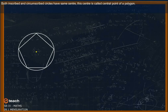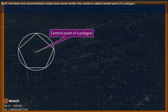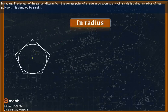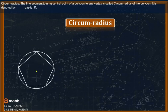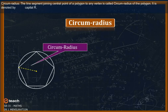If the circle is drawn touching each side of the polygon, it is called the inscribed circle. Both inscribed and circumscribed circles have the same center, called the central point of the polygon. In radius: the length of the perpendicular from the central point to any side is called the in radius, denoted by small r. Circum radius: the line segment joining the central point to any vertex is called the circum radius, denoted by capital R.